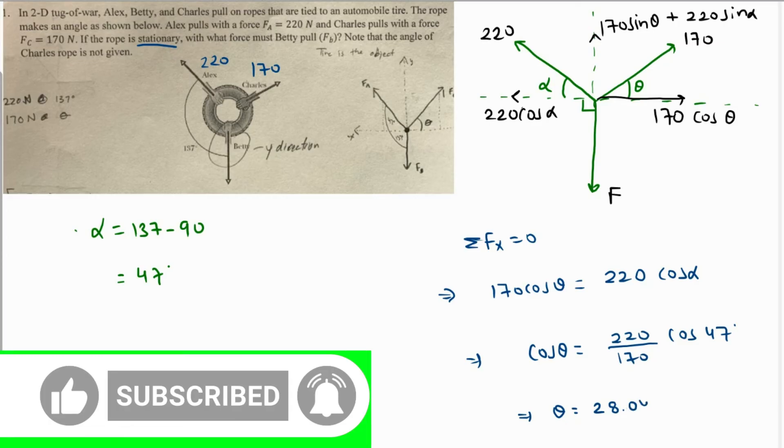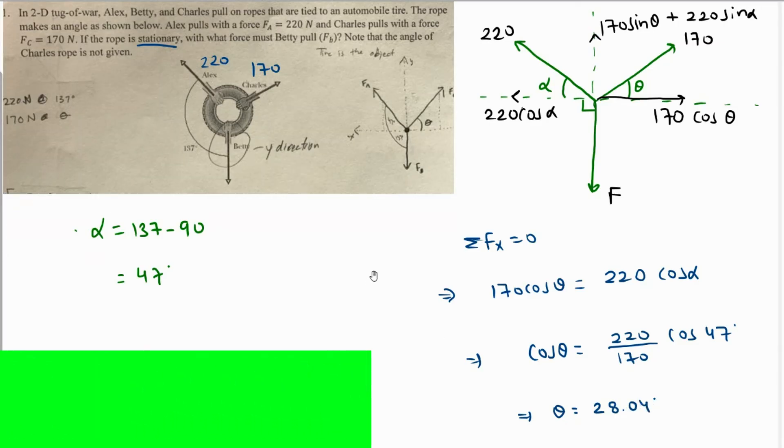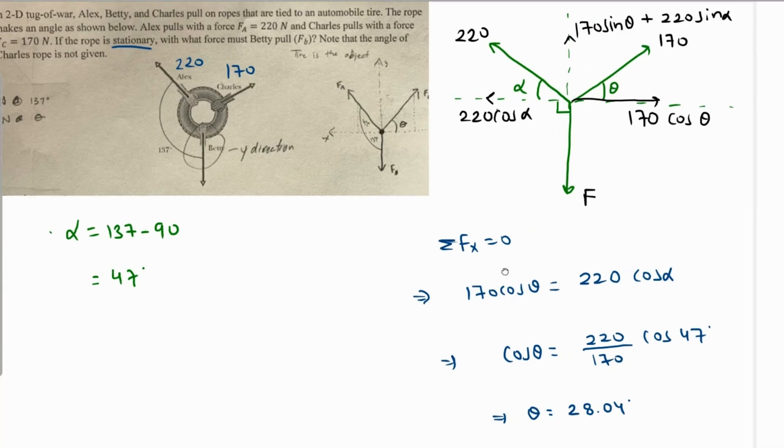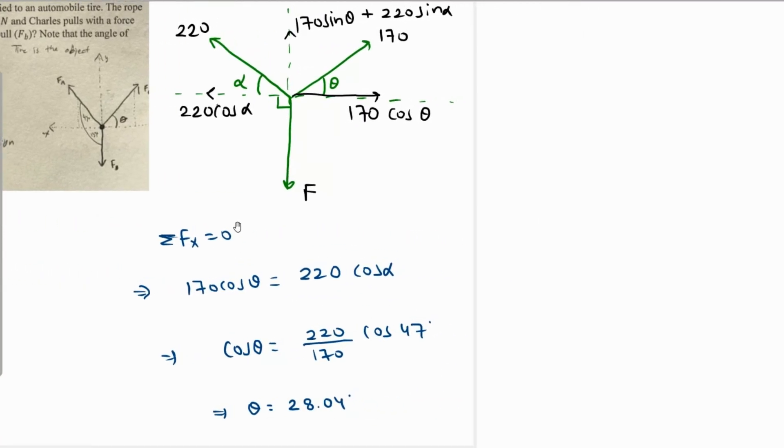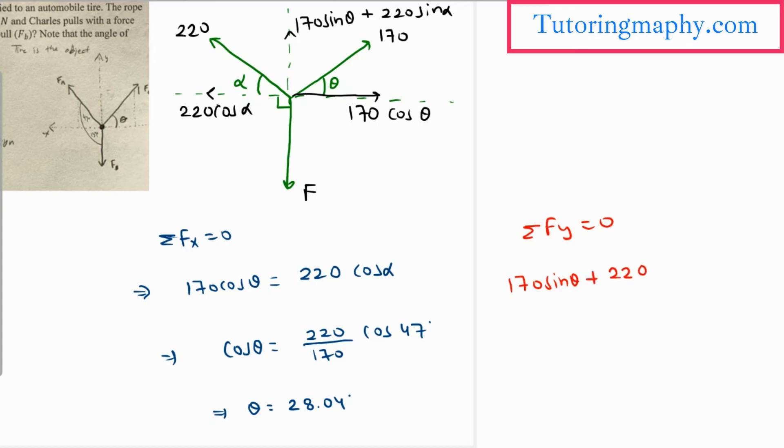Let's do the same thing with the vertical force this time. Let me just try to make some space over here. If we do the same with the vertical forces, then Fy should be 0, which means that 170 sine theta plus 220 sine of alpha should be F.